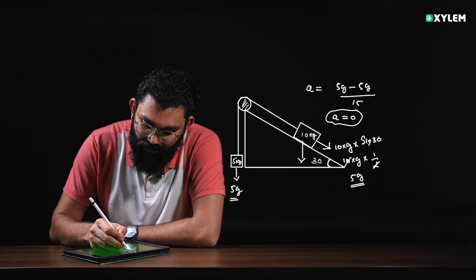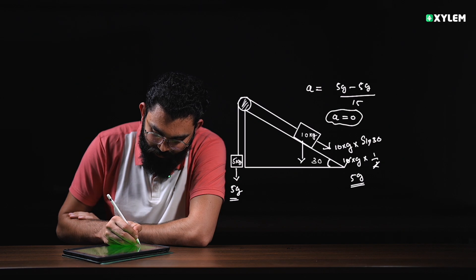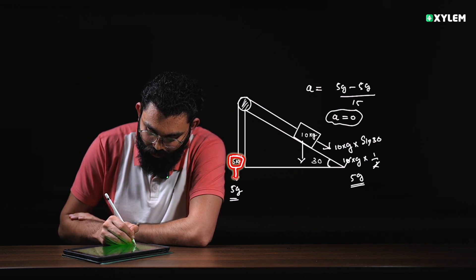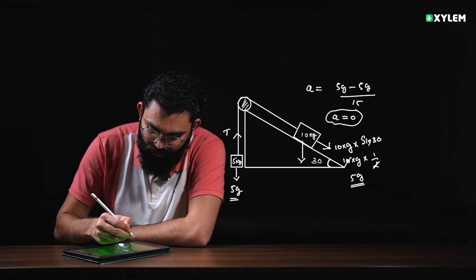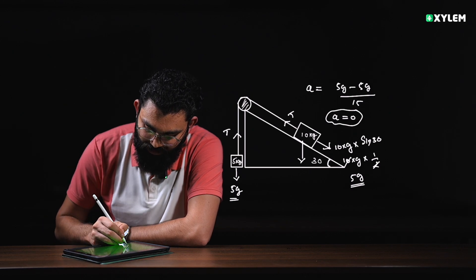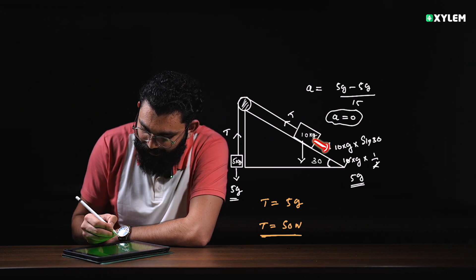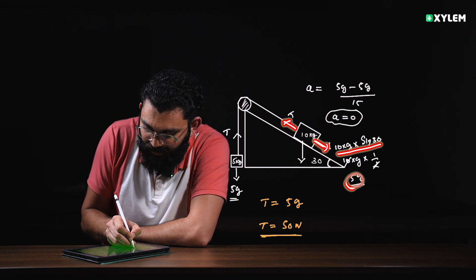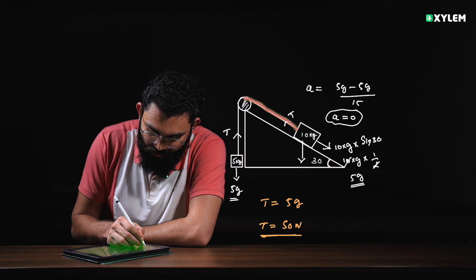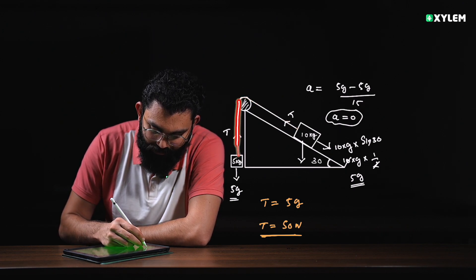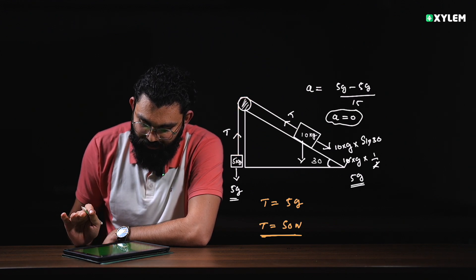The acceleration is zero — the system is in balance. The block will not move. Since tension is always away from the body, the tension is balanced by 5g. The tension equals 50 N. Along the inclined plane, 10g sin 30 equals 5g, so tension T equals 5g equals 50 N. Since it is a single rope, the tension is the same throughout.